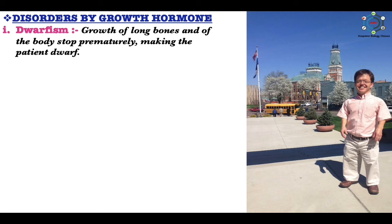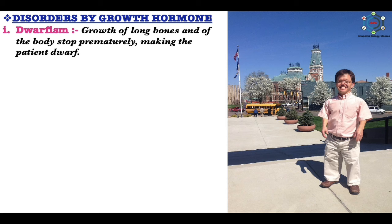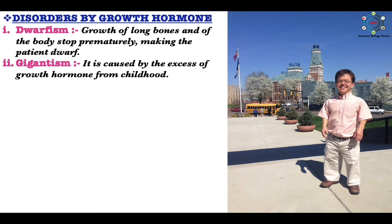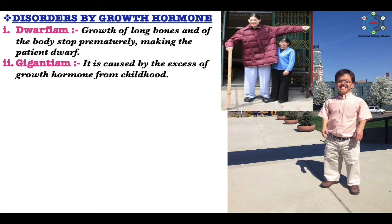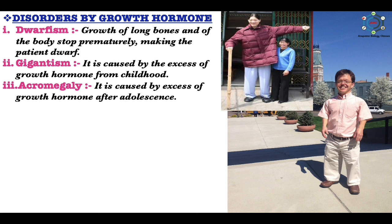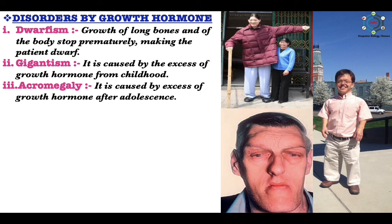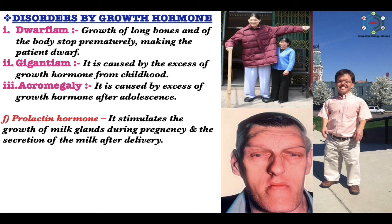Disorders caused by growth hormone include: dwarfism, where growth of long bones and of the body stops prematurely, caused by deficiency in early stages; gigantism, caused by excess growth hormone from childhood, resulting in abnormally tall stature and very long bones; and acromegaly, caused by excess growth hormone after adolescence, where bones of the lower jaw and limbs become abnormally large but the body doesn't attain giant stature. Prolactin stimulates growth of milk glands during pregnancy and secretion of milk after delivery.